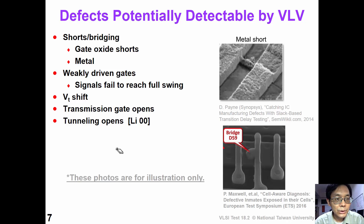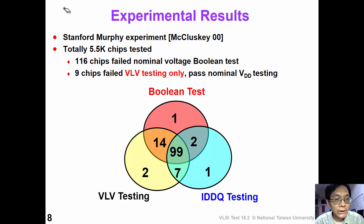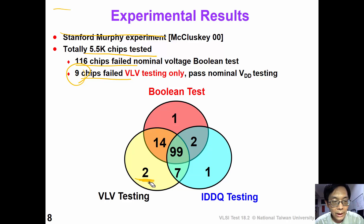According to Stanford's research, there are several defects potentially detectable by VOV testing, such as gate oxide short, metal short, weakly driven gates, VT shift, transmission gate open, and tunneling opens. According to the Stanford Murphy experiment, there were a total of 5,500 chips tested, and 116 chips failed the nominal voltage boolean test. There were 9 chips that failed VOV testing only — they passed all the nominal VDD testing. Two of them did not have any high IDDQ, and seven of them also had high IDDQ. This is the Venn diagram of the Murphy experiment.